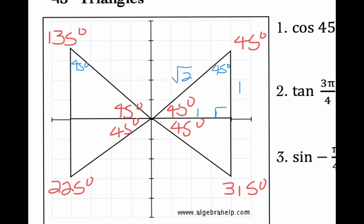There's 45 degrees, a right triangle. My opposite is 1, my adjacent is negative 1 because it's moving to the left. My hypotenuse is radical 2. For 45 degrees in quadrant 3 — that was at 225 — so I have negative 1 as my opposite, negative 1 as my adjacent, radical 2. And then for 315, my opposite is negative 1 because it's going down. My adjacent is 1, and my hypotenuse is radical 2.